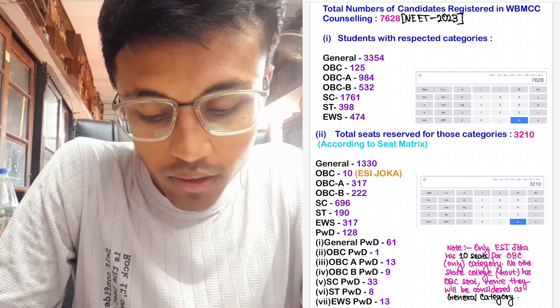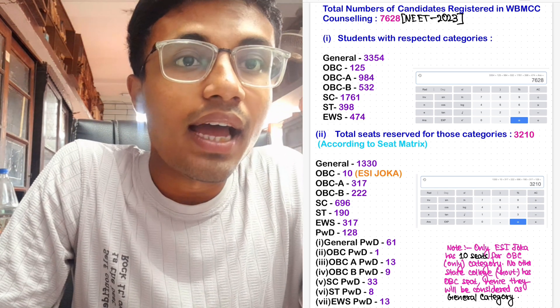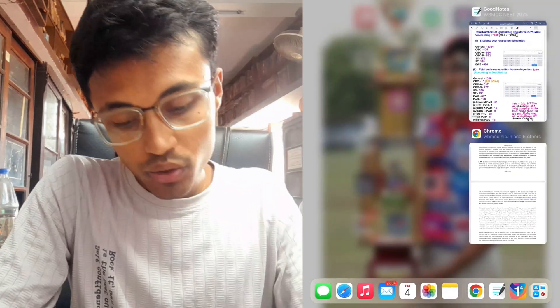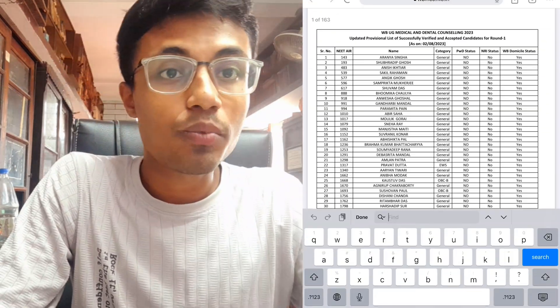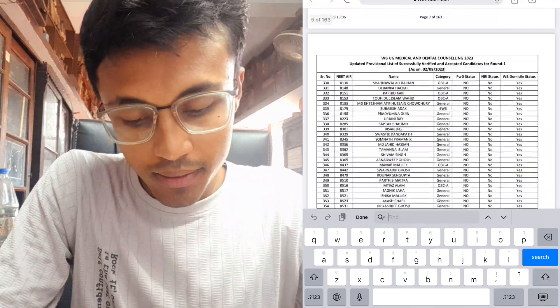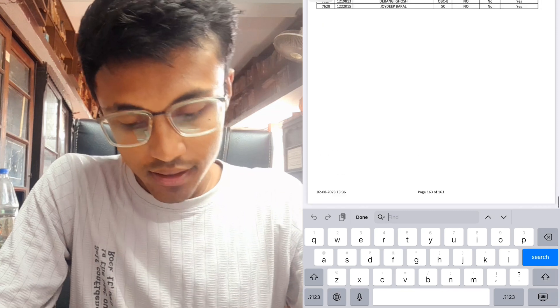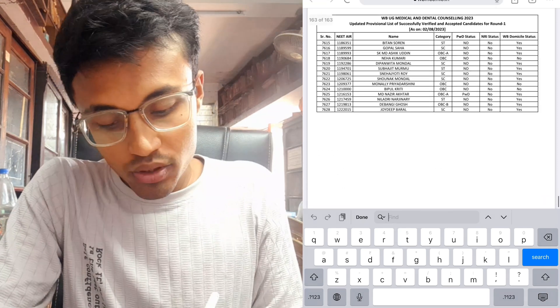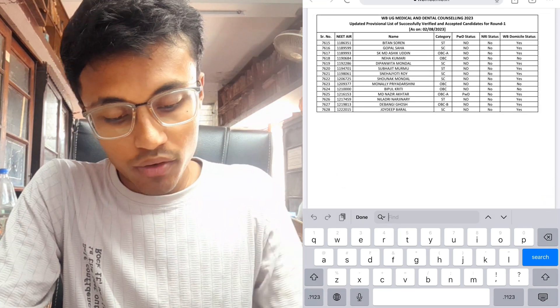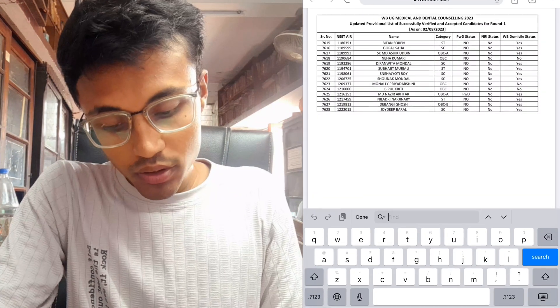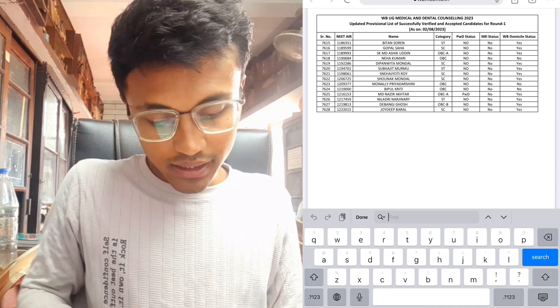Now you guys will have a common doubt: from where did I get this data and is it correct or wrong? What I want to show you is the provisional list. This is a provisional list released by WBMCC just a few days ago, and it shows your state rank. This serial number is your state rank and these are the total number of candidates which have participated in this year's counseling.